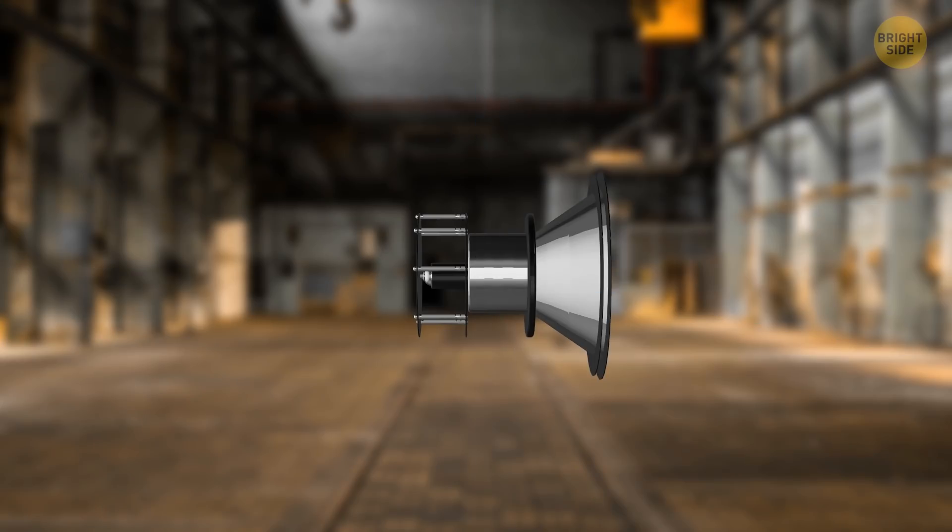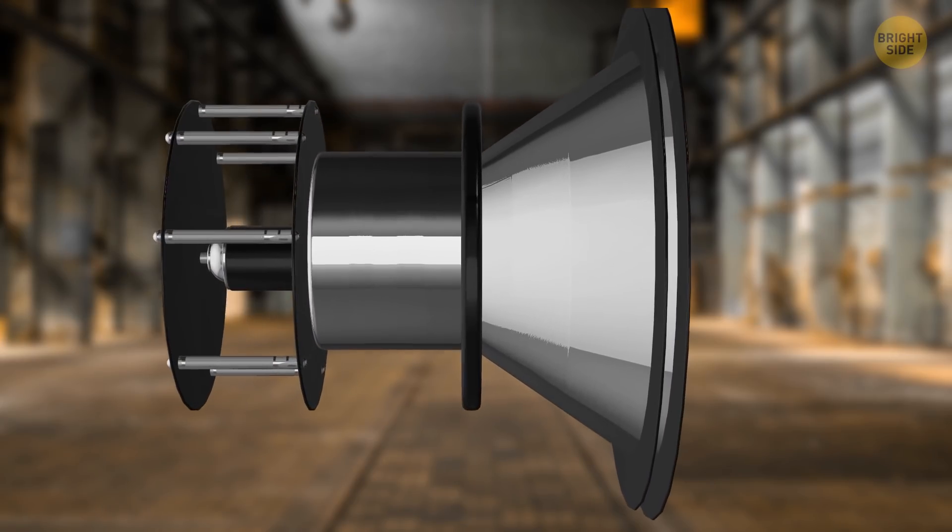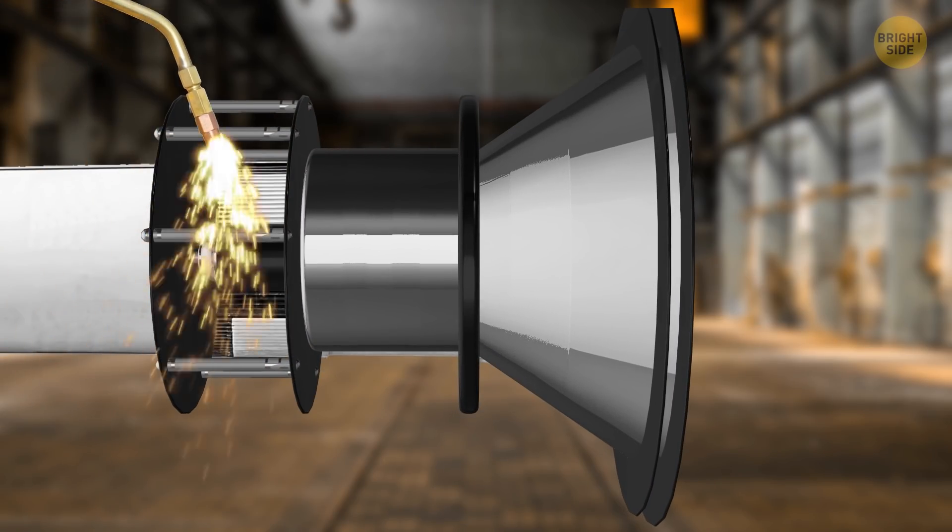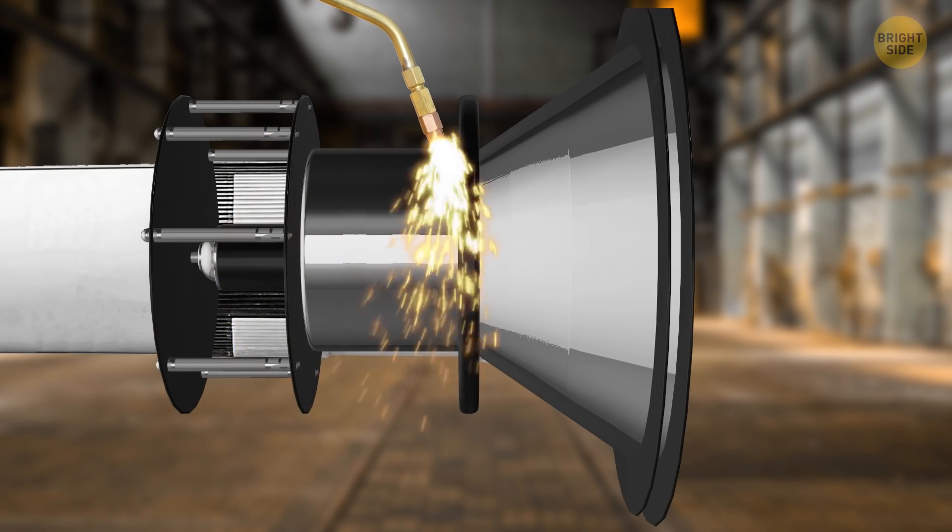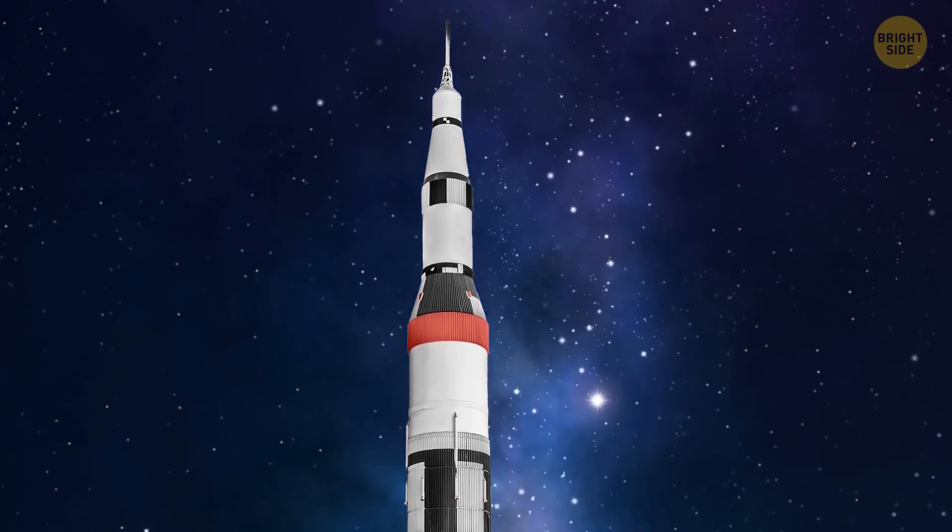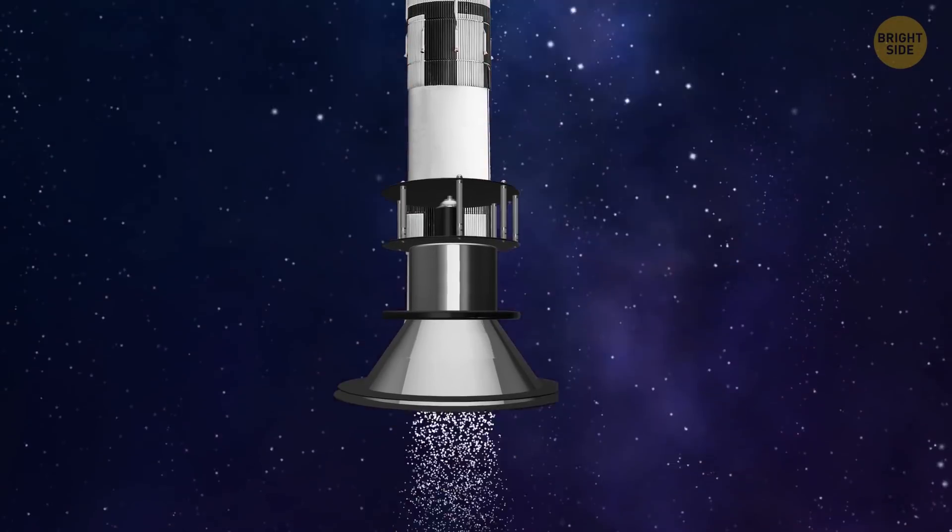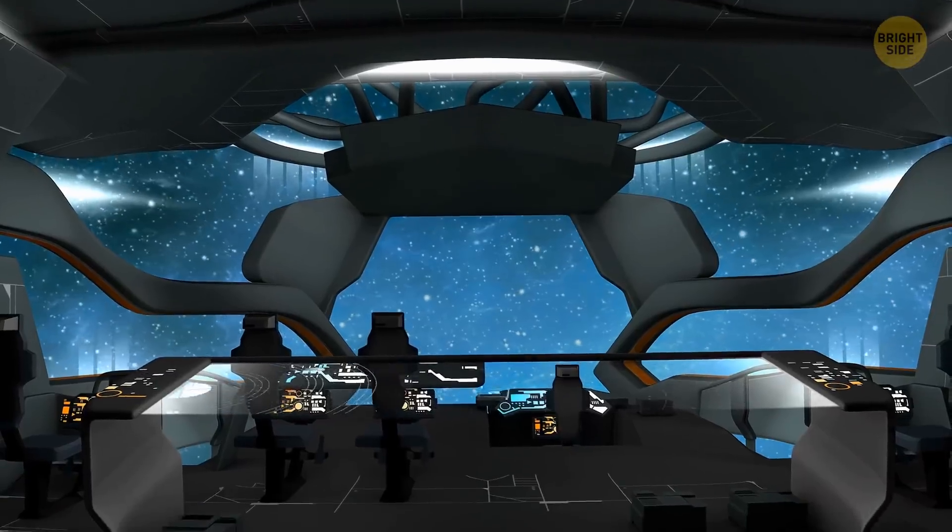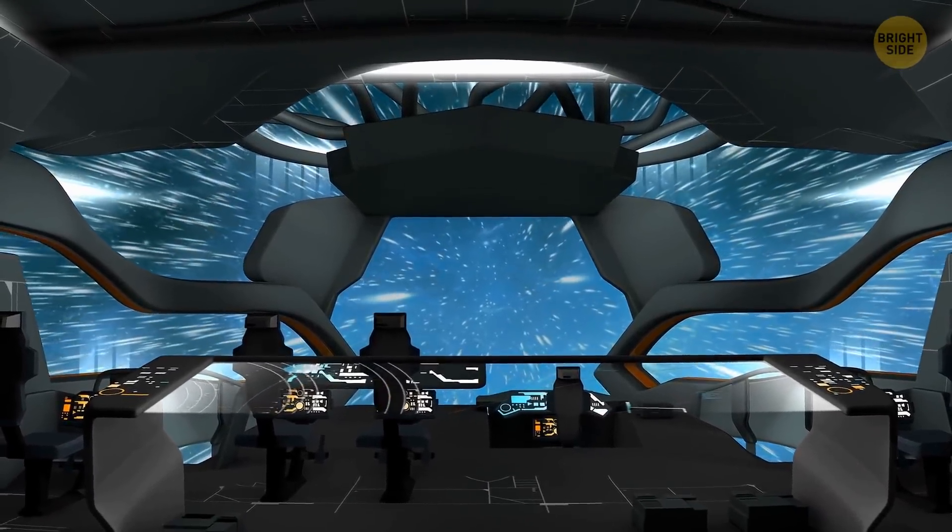Now, let's make this model much, much larger and put the EM drive on a spaceship. The narrow end of the cone faces up. The wide end is turned downward. The magnetron starts to work. The resonator creates thrust and the rocket takes off. It makes no noise and doesn't emit any harmful gases at all. This mechanism can accelerate the rocket much faster than we do with tons of fuel.